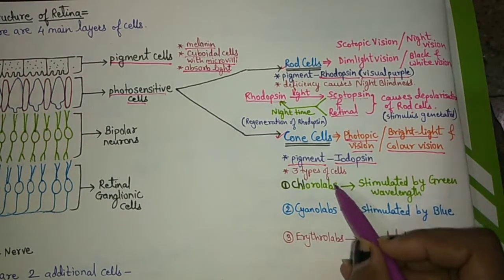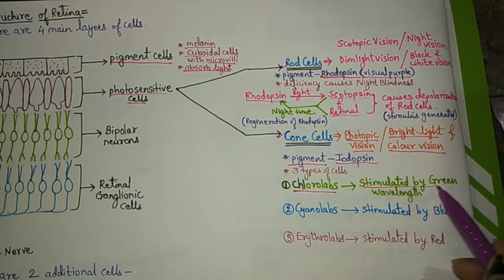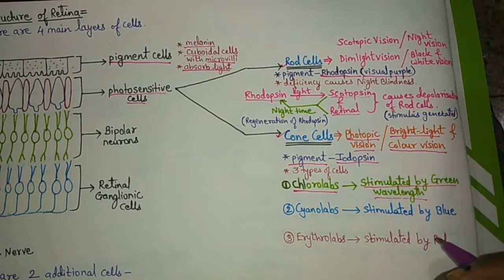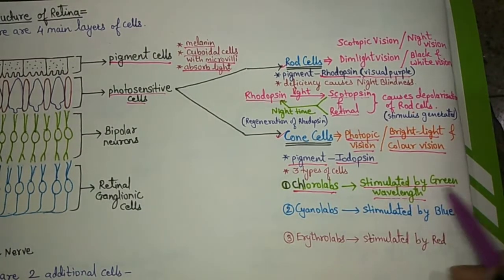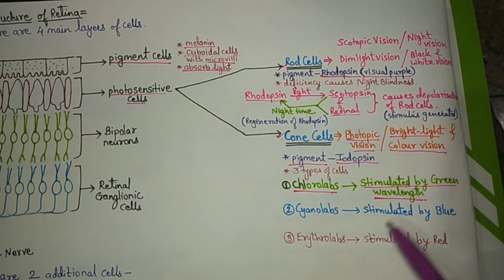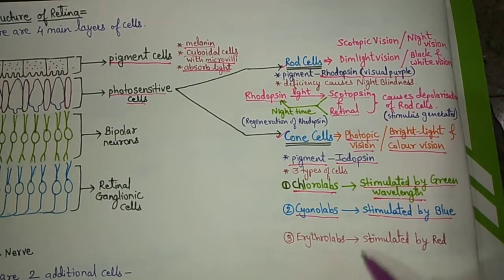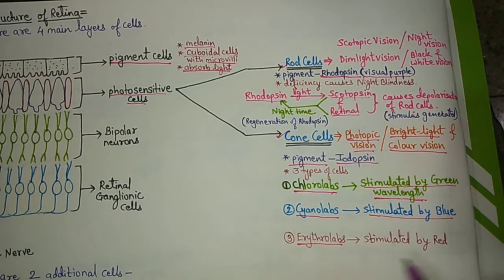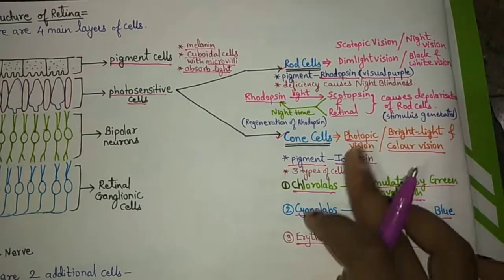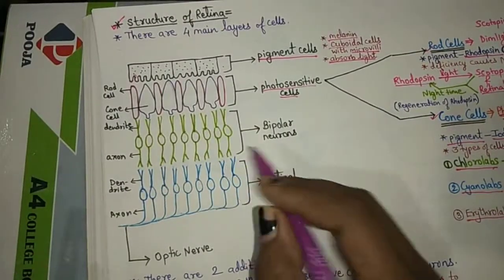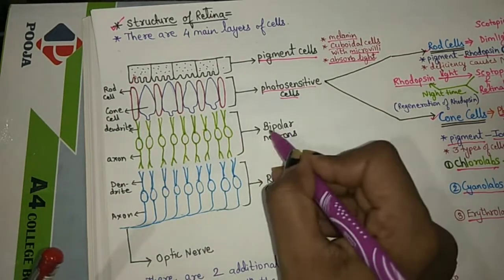There are three types of cone cells: chlorolabs, which are stimulated by the green wavelength; cyanolabs, which are stimulated by the blue wavelength; and erythrolabs, which are stimulated by the red wavelength.